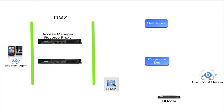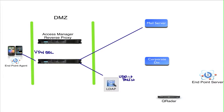A much better approach would be to do this via VPN SSL. Using our access management reverse proxy, the end user can go to the appliance, and the first time they connect, or after a certain period of time, they need to authenticate using their user ID and password into the corporate LDAP. Once authenticated, if they are allowed to retrieve mail or access the corporate directory, the policy allows them to do that, and it's enforced by the appliance.